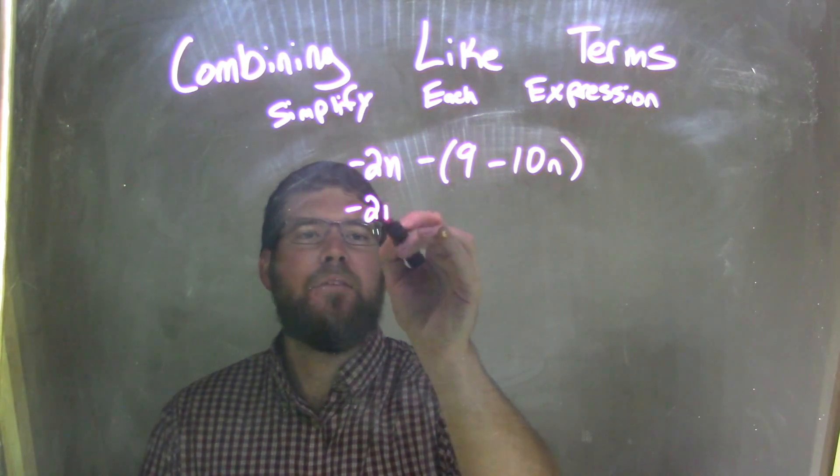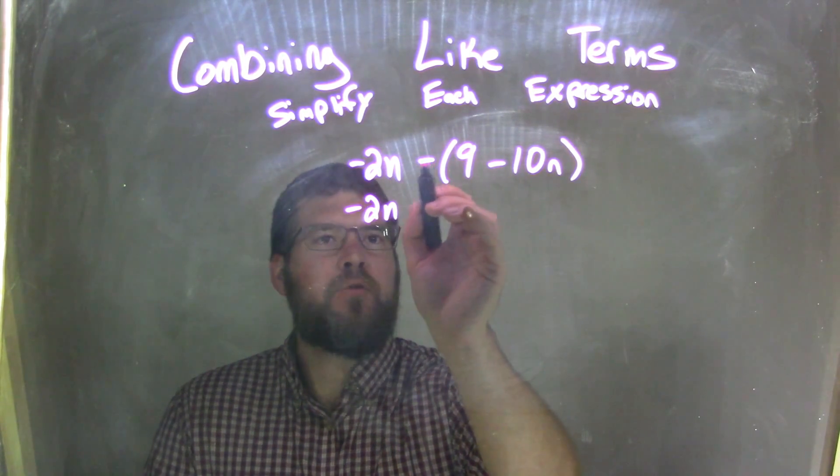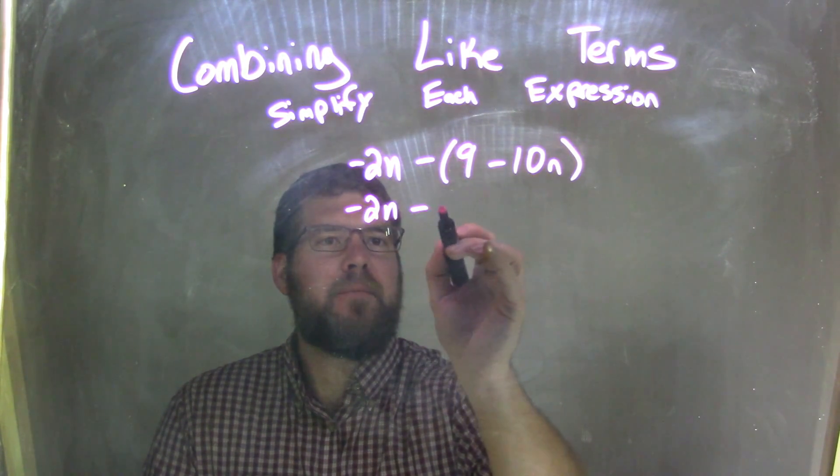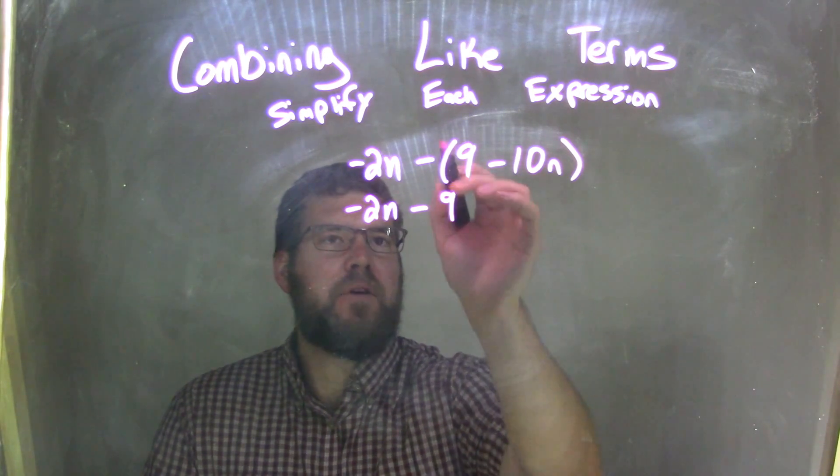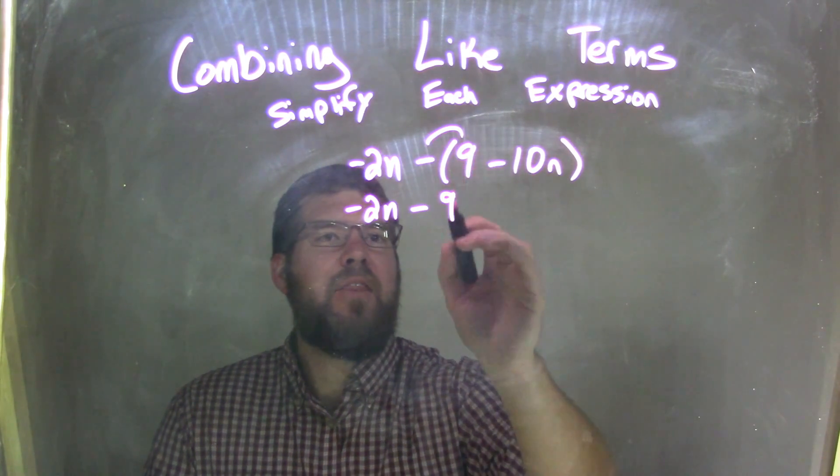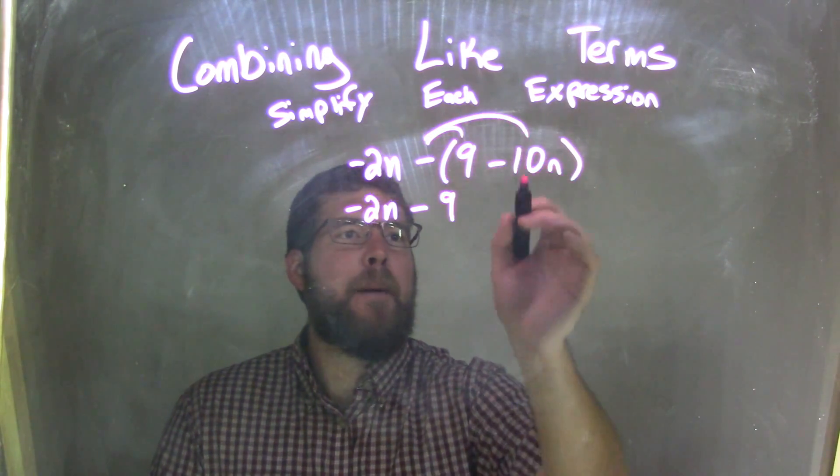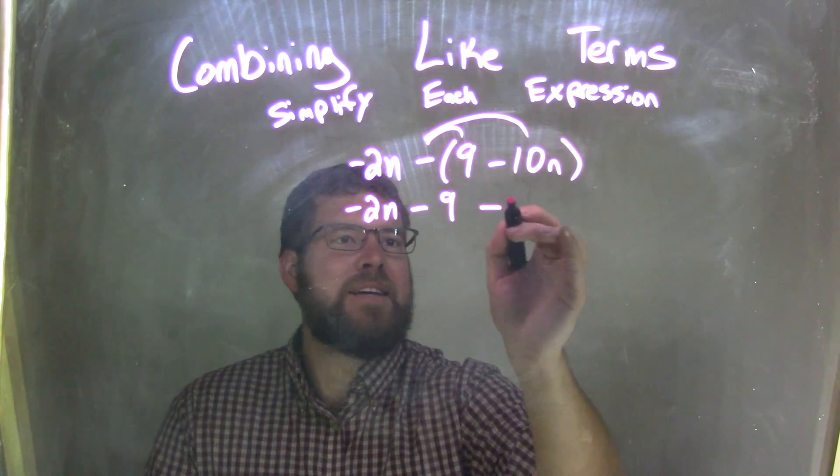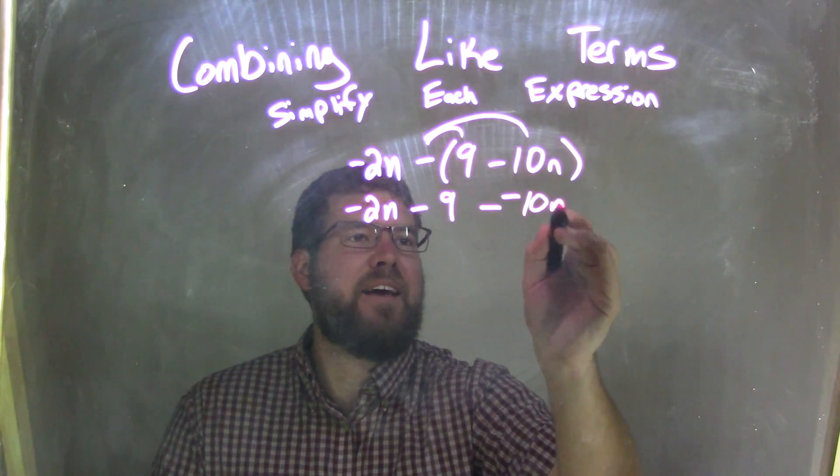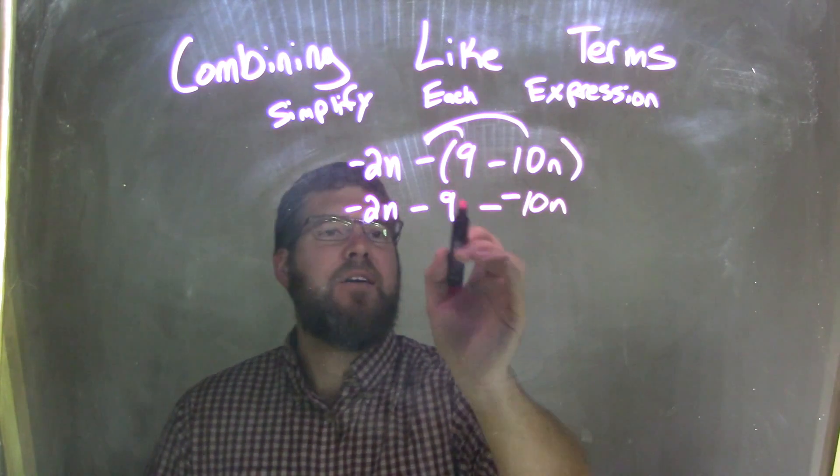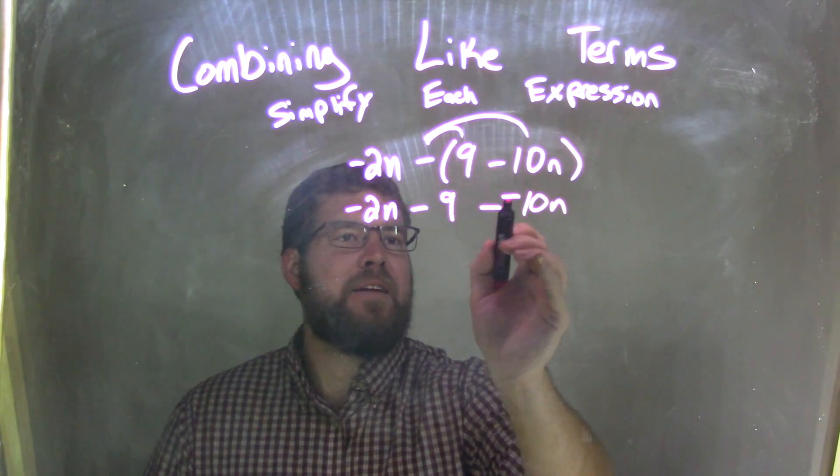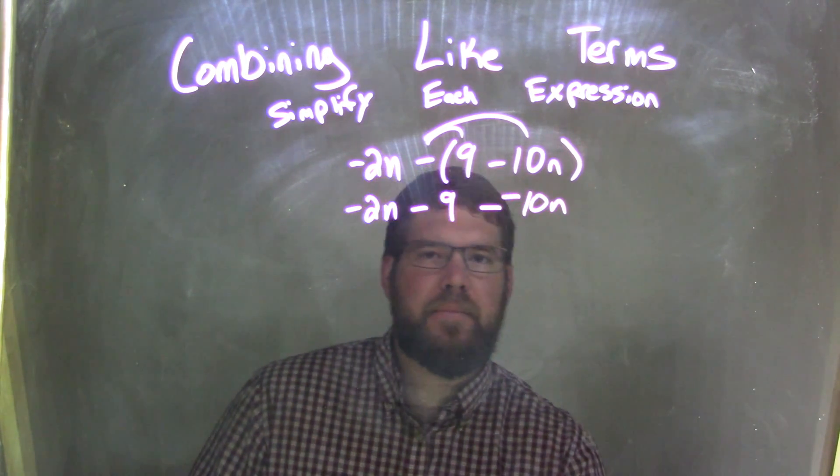The negative 2n comes out front. Now, subtraction, subtracting a 9, distributing that, so I distribute that subtraction to the 9. Then I need to subtract a minus 10n, so I subtract a negative 10n. Again, watch that, subtract a negative 10n.